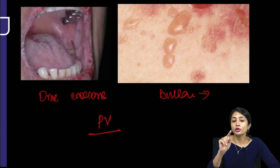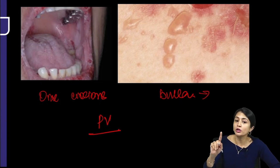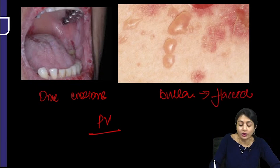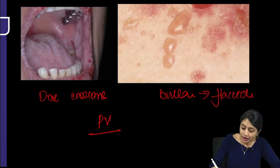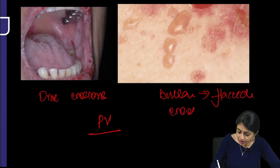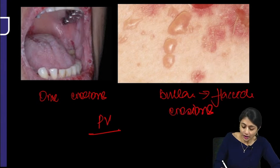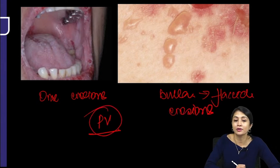Just by the look of the bulla, it is sometimes difficult to say whether it is tense or flaccid. Usually in the exam, you would be given. Flaccid bulla and erosions present on the body along with oral erosions are a feature of pemphigus vulgaris.